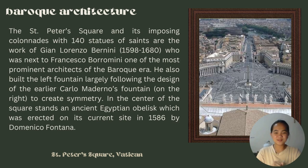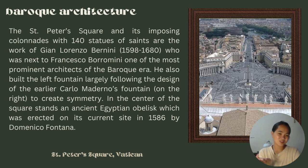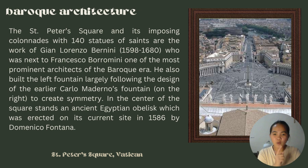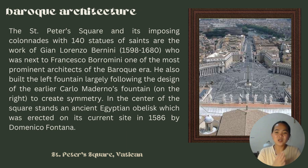Saint Peter's Square and its imposing colonnades with 140 statues of saints are the work of Gian Lorenzo Bernini, who was next to Francesco Borromini as one of the most prominent architects of the baroque era. He also built the left fountain largely following the design of the earlier Carlo Maderno fountain.